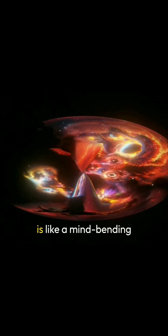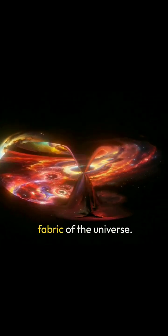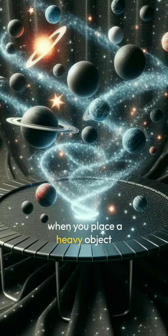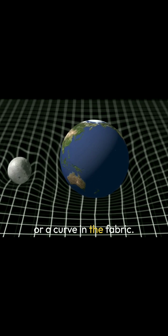Einstein's general theory of relativity is like a mind-bending adventure through the fabric of the universe. Imagine the universe as a giant trampoline. When you place a heavy object like a bowling ball on the trampoline, it creates a dip or a curve in the fabric.